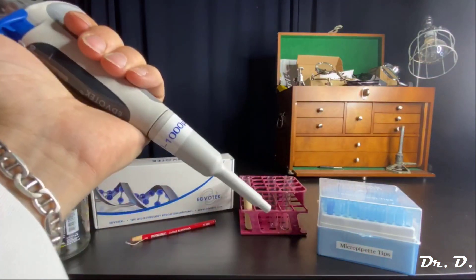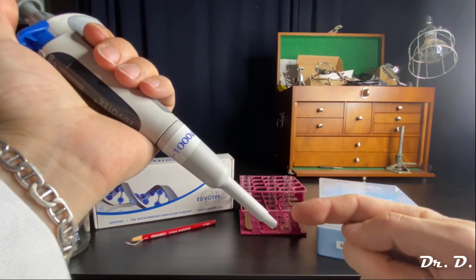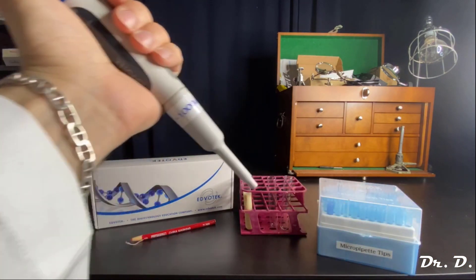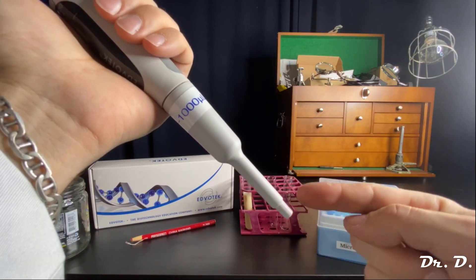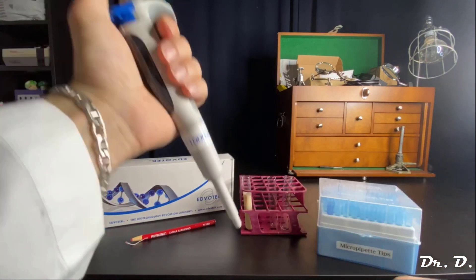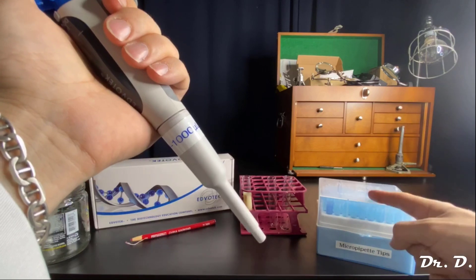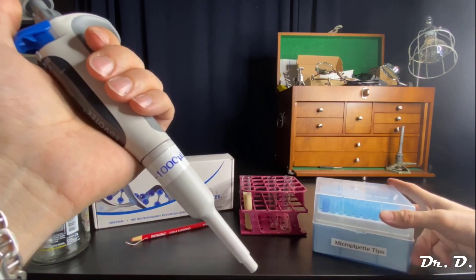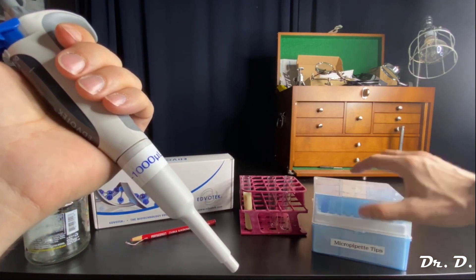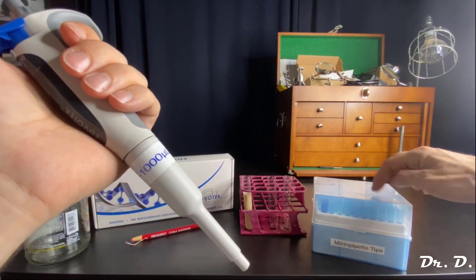Now I need a tip. I always use a fresh tip when I want to aliquot solutions. I never dip this micropipettor into a solution without a sterile tip. These tips are usually sterilized and you will open this up. Micropipette tips. These are the P1000 micropipette tips.